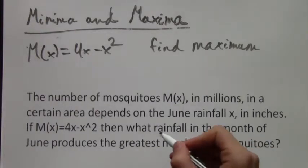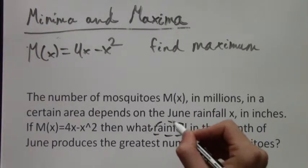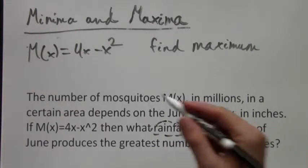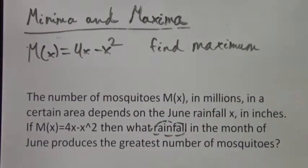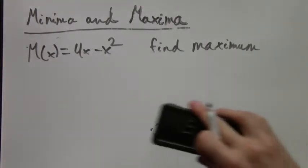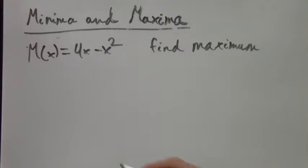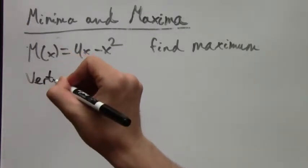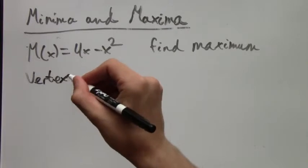But it's important to remember that sometimes you're being asked for the y value and sometimes for the x. So again, I highlight, we're asked for what rainfall in the month of June produces the greatest number of mosquitoes. What number of mosquitoes happens to be there is not required for the answer, just the value of x.